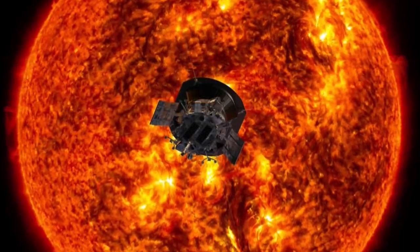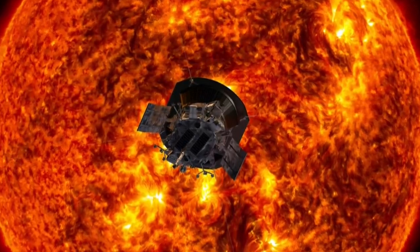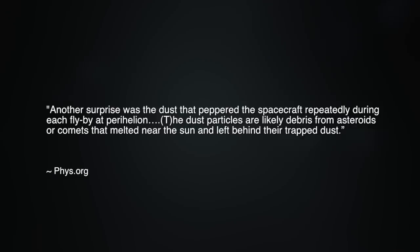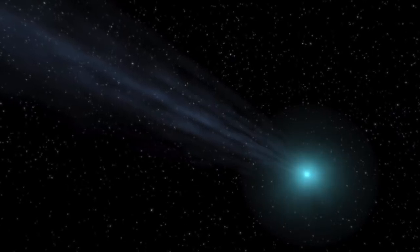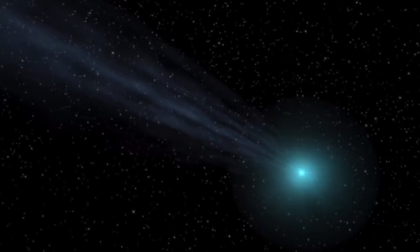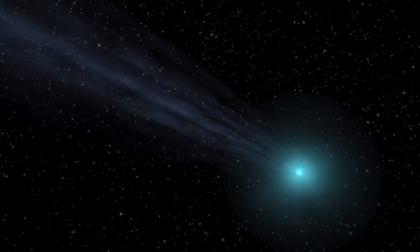Scientific reports describe the Parker Probe being bombarded with dust particles during its closest approaches to the Sun. A phys.org report states: Another surprise was the dust that peppered the spacecraft repeatedly during each flyby at perihelion. The dust particles are likely debris from asteroids or comets then melted near the Sun and left behind their trapped dust. But this begs the question: how large an amount of rocky comet and asteroid material would have to be spread through such an unimaginably vast volume of space?